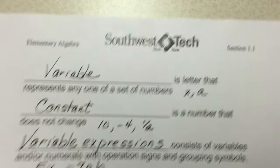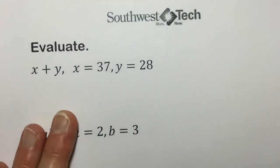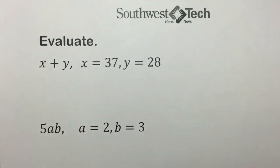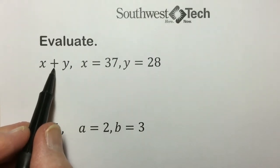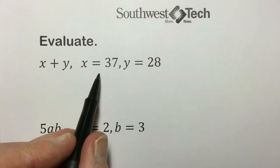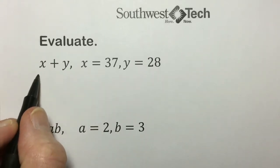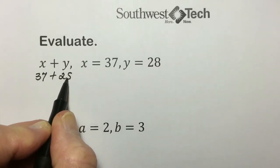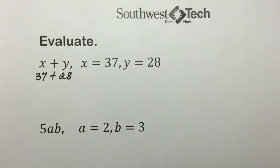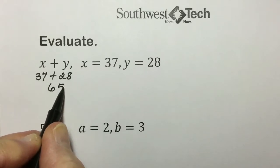Let's take a look at evaluating some variable expressions. Here we have a variable expression, two variables connected with the addition sign. The problem is indicating that the value of x is 37. We will replace x with 37. Y has the value assigned to it 28. Once the variables have been replaced with the value, we can simplify the expression and carry out the addition. 37 plus 28 is going to give us 65.